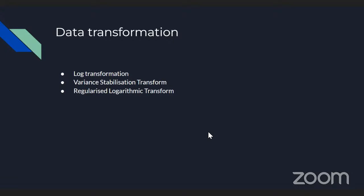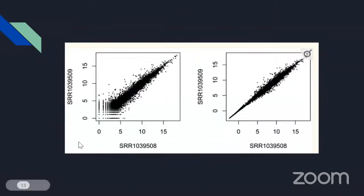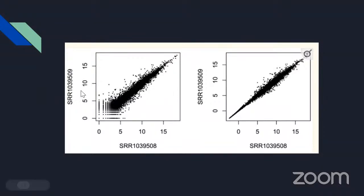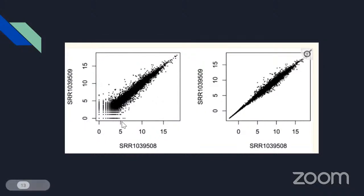When you look at two samples, such as SRR508 and SRR509, and look at the spread of gene counts, we can see there is very high variance when counts are low. Whereas in the case of very high counts, we don't see a lot of variability between the two samples.